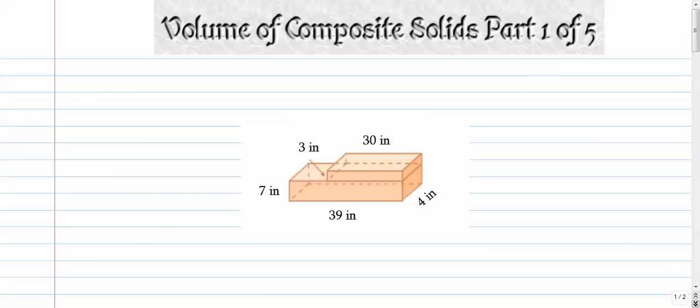Now first things first, a composite solid is basically a solid that's created by combining two or more other solids, or sometimes even subtracting some solids. So this one is going to be our first one and for all of these we'll have five videos on volume. Each video has two examples and then we'll come back and do surface area in a five part series as well.